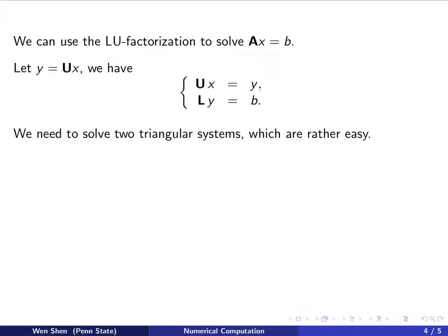U is a matrix, X is a vector, so the product is a vector. Then we have U times X equal Y, L times Y equals B.